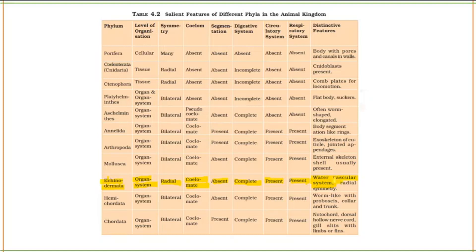First of all, if we talk about Echinodermates, we have a general overview of Echinodermata — the water vascular system, as well as radial symmetry present. If we talk about Hemichordates, there is an organ system level, bilateral symmetry, coelomates, segmentation absent, digestive system complete, circulatory system present, respiratory system present. The distinctive feature, if we talk about worm-like features, we have proboscis, collar, and trunk present.